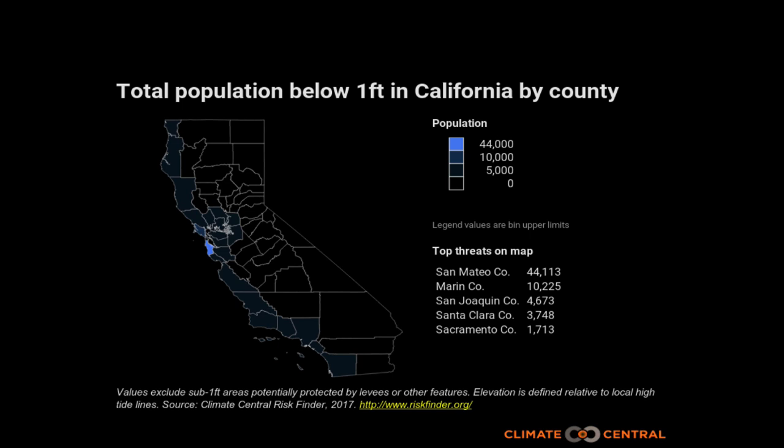Here's total population in California. We're going to look at it in different elevational increments — that's an elevational measure of the coastal zone. We're looking at California counties and how many people live at or below a given elevation. The first is one foot above mean higher high water.